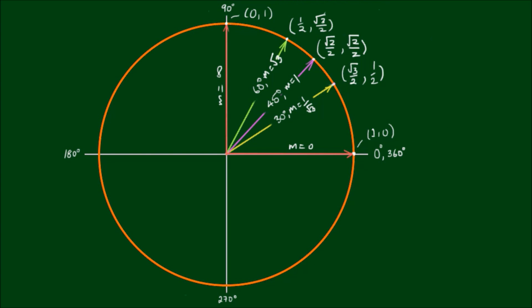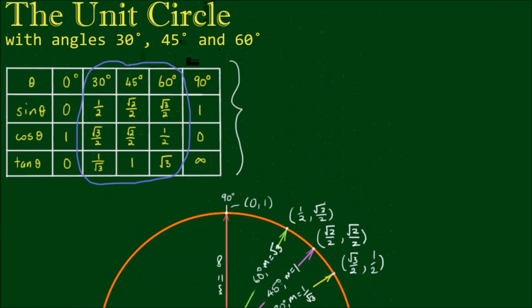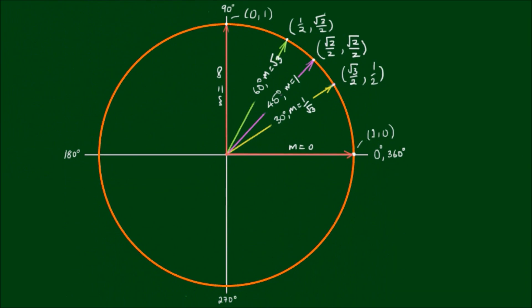So we've populated the first quadrant of the unit circle with the data in our table. But now can we use the unit circle to find the sin and cos of angles that are bigger than 90 degrees? Well, let's find out.